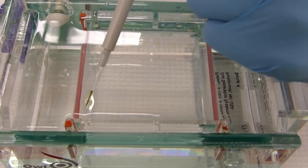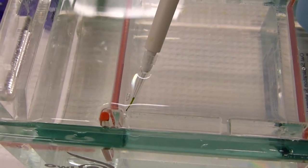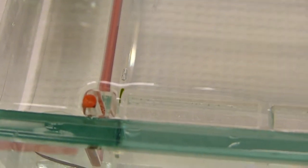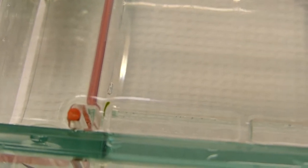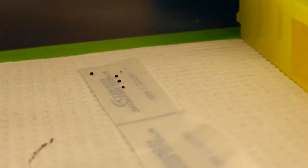You will want to take your loading dye and carefully put it into the first slot in the gel. You can take it, put it down in the slot carefully and eject it. Be careful not to puncture the gel as this will cause problems with your running and you will not get accurate results. But be careful also to make sure that you are in the slot when you eject it or else the dye will just go everywhere.